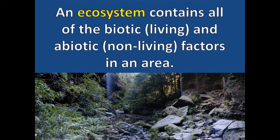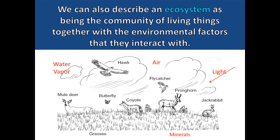An ecosystem contains all of the biotic and abiotic factors in an area. When describing an ecosystem, we're talking about both the living and the non-living things. We'll still talk about the plants and animals, but we'll also discuss things like the amount of rainfall and the quality of the air and soil. An ecosystem can also be described as the community of living things together with the environmental factors that they interact with. Anytime we talk about both the living and non-living components of an area, we're describing an ecosystem.